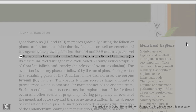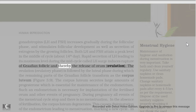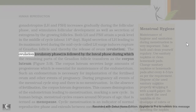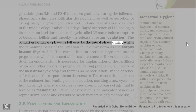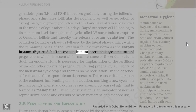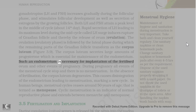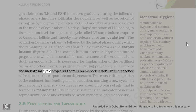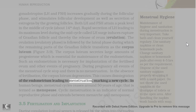Both LH and FSH attain a peak level in the middle of the cycle, about the 14th day. Rapid secretion of LH leading to its maximum level during the mid-cycle, called LH surge, induces rupture of the Graafian follicle and thereby the release of the ovum (ovulation). The ovulatory phase is followed by the luteal phase during which the remaining parts of the Graafian follicle transform as the corpus luteum. The corpus luteum secretes large amounts of progesterone which is essential for maintenance of the endometrium. Such an endometrium is necessary for implantation of the fertilized ovum and other events of pregnancy. During pregnancy all events of the menstrual cycle stop and there is no menstruation. In the absence of fertilization, the corpus luteum degenerates, causing disintegration of the endometrium leading to menstruation and marking a new cycle.